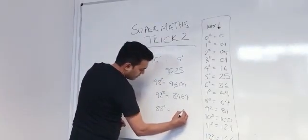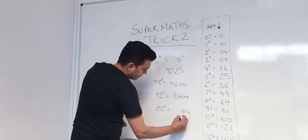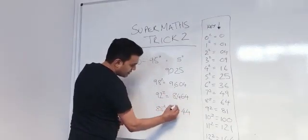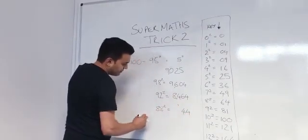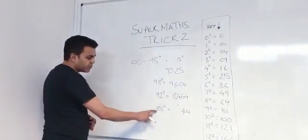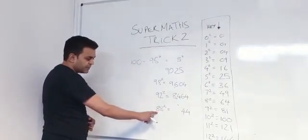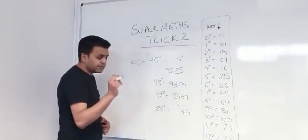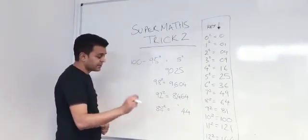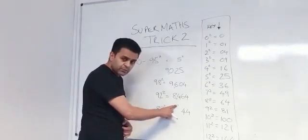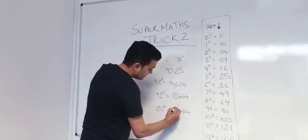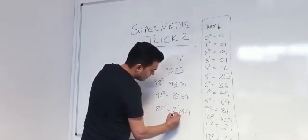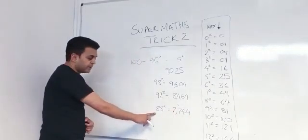What we're going to do: last two digits are 44. We're going to carry the 1 because it's a hundreds column. We'll put the 1 there. Now take away the 12 from that figure there, from 88. 88 take away 12 is 76. 76 add the 1, it's 77. So that's 7744 is 88 squared.